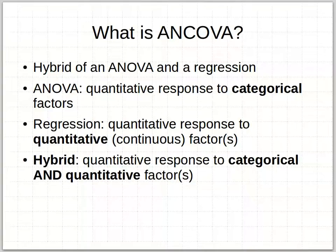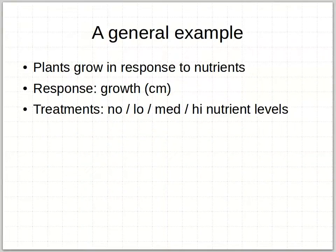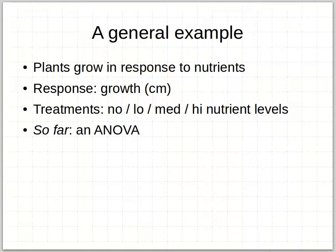Now it's useful because you might find that another variable affected the responses of your categorical treatments and you need to know what that response might have been. Let's think about a general example: you have plants growing in response to nutrients, a classic experimental study in agriculture. The response would be how tall the plants become — growth measured in centimeters — and you might have treatments of no, low, medium, and high nutrient levels. So far that's simply an analysis of variance.